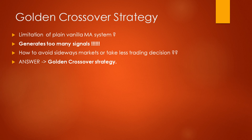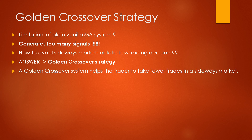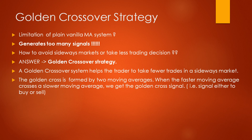The answer to this problem is the golden crossover strategy. A golden crossover helps the trader to take fewer trades in a sideways market. The golden cross is formed by two moving averages. When the faster moving average crosses a slower moving average, we get the golden cross signal. That intersection of two moving averages is called a golden crossover, and hence we get either a buy or a sell signal.